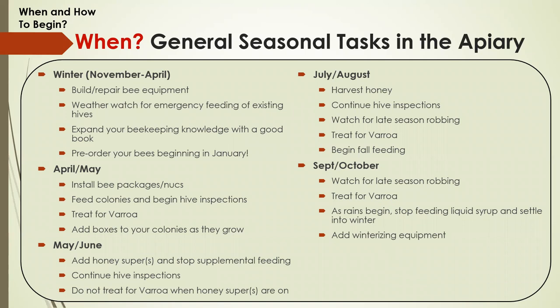In April and May you're going to be doing your installations and starting your feeding for existing colonies. Install your packages and nukes, get them situated and ready to go. Make sure to feed them heavily at this time because you're trying to build them up for the season — you're trying to get their population big enough that you can actually harvest honey. This is also when you begin your treatments for varroa mites. It's good to start early, keep up your integrated pest management, and get the mites down before they go into winter.